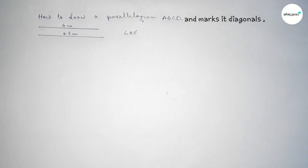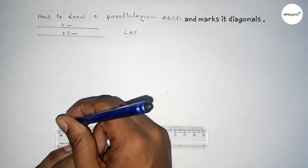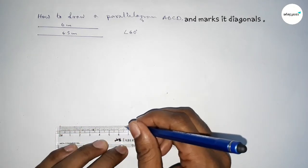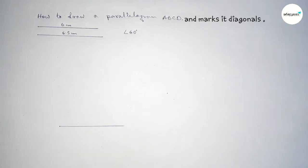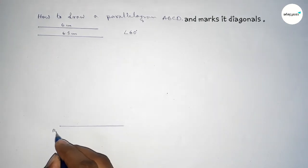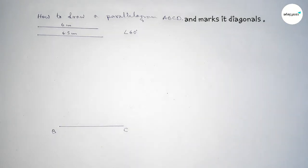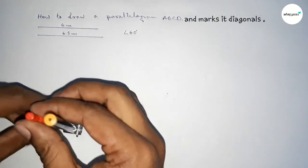First, we draw a line of length 6.5 centimeters. This is 6.5 centimeters. We take here point B and here point C. Now we have to draw a 60 degree angle at point B.